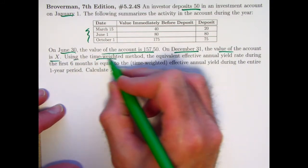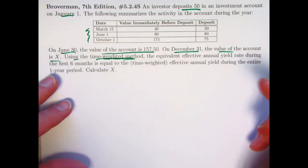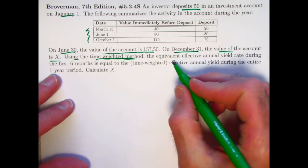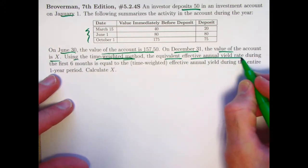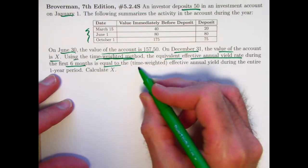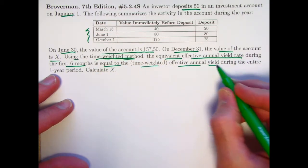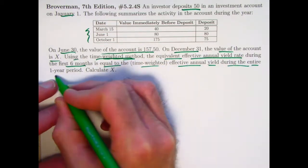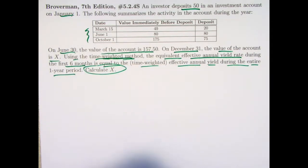Using the time-weighted method — which is really a misnomer and confusing; it really doesn't weight time in any way I can see — the equivalent effective annual yield rate during the first six months is equal to the time-weighted effective annual yield during the entire one-year period. The goal is to calculate X.